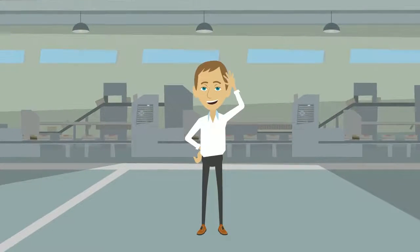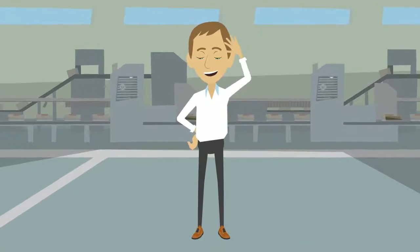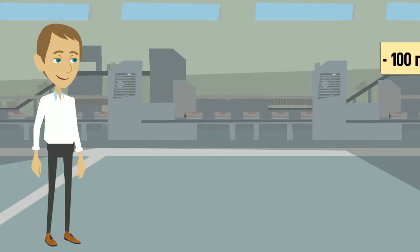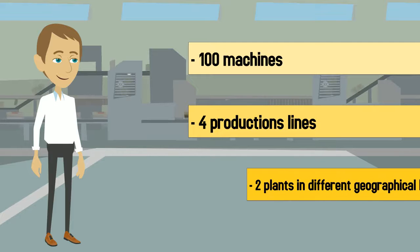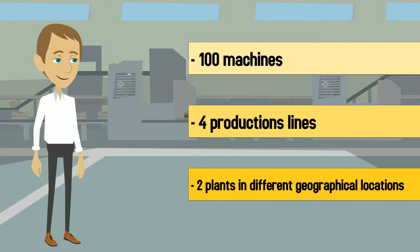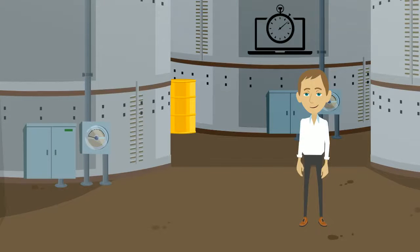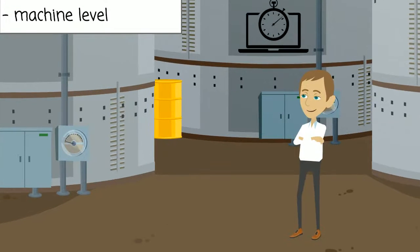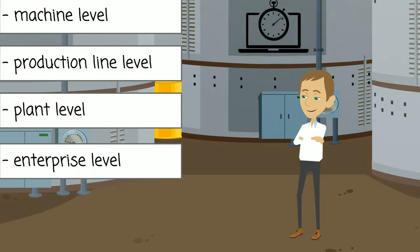John has been promoted as factory manager in a big production manufacturer. The plant is composed of 100 machines all generating data, four production lines and two production plants in different geographical locations. He has been given the task to provide real-time accurate visibility metrics at machine level, production line level, plant level, and enterprise level.